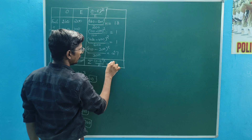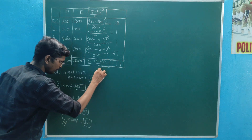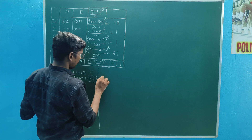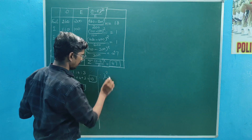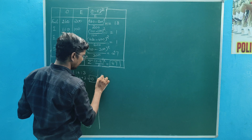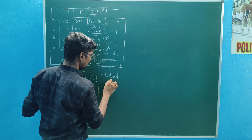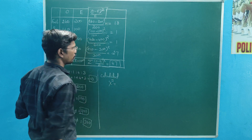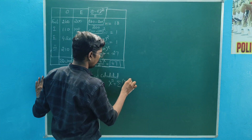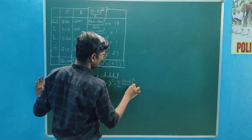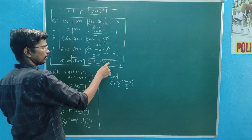So the chi-square calculated value: chi-square calculated = summation of O minus E whole square divided by E. The chi-square calculated value is 47.